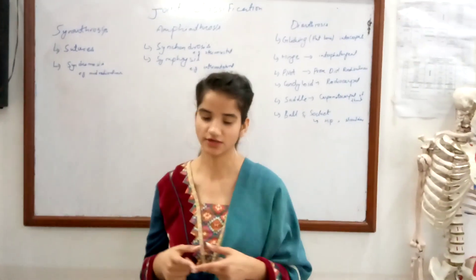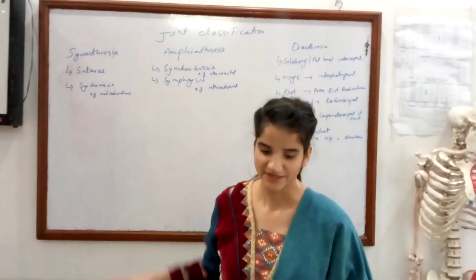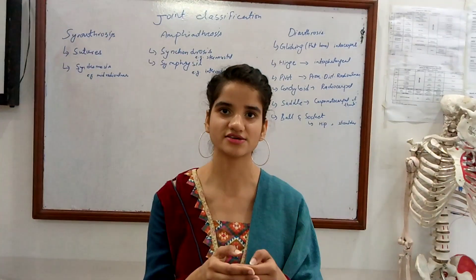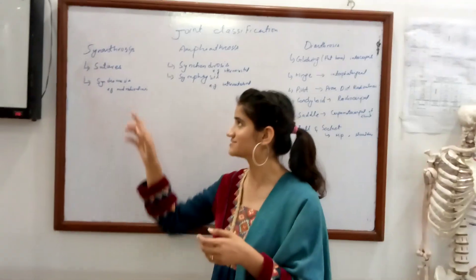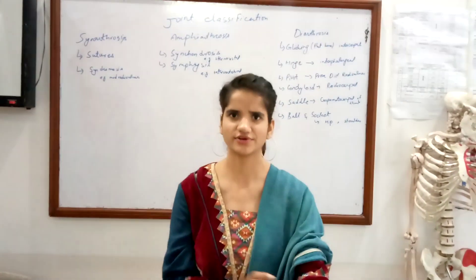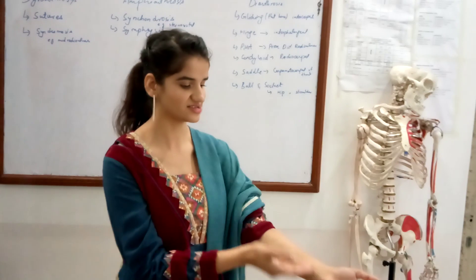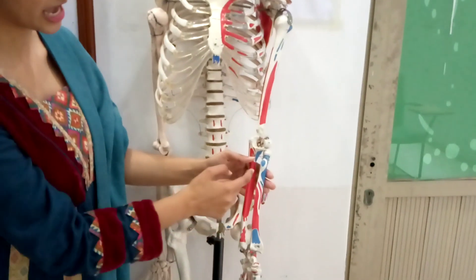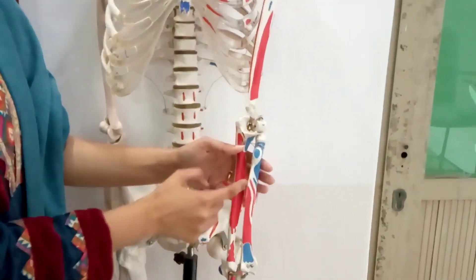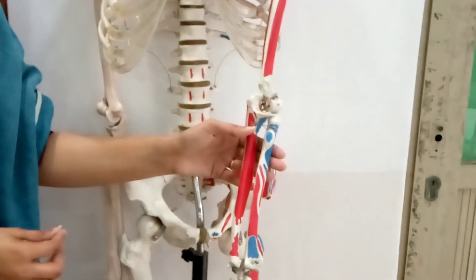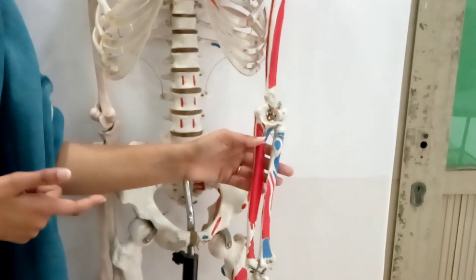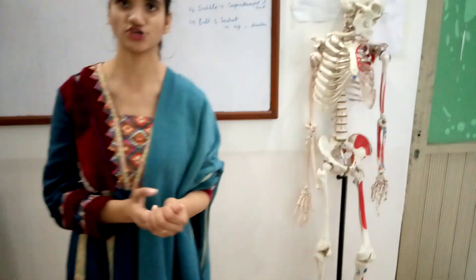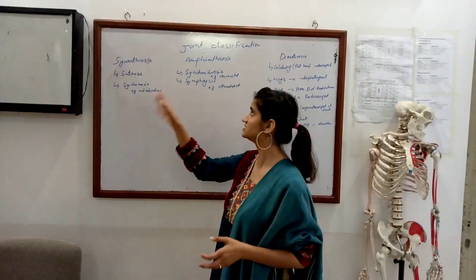Moving towards the second type, syndesmosis. Syndesmosis are joints which are held together by a band. The best example is the mid-radio-ulnar joint — the joint formed between the radius and ulna. As you can see, this is the radius and this is the ulna. A fibrous band is present in between, and this type of joint is called a syndesmosis joint.